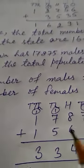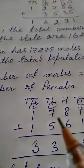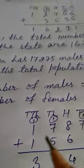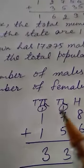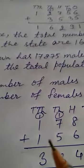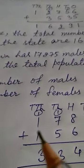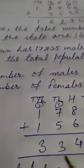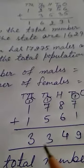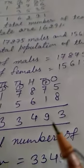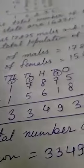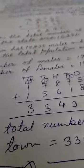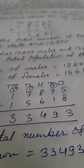Now in the 1,000 place, 7 plus 5 is 12, and adding the carried over 1 gives 13. Write 3 at the 1,000 place and carry 1 to the 10,000 place. In the 10,000 place, 1 and 1 are already there: 1 plus 1 is 2, plus the carried over 1 equals 3. Write 3 here. So the answer is 33,493. Hence, the total population of the town is 33,493.